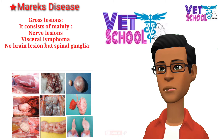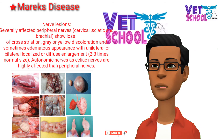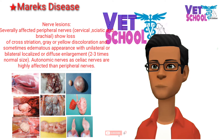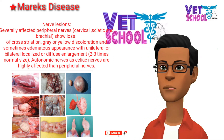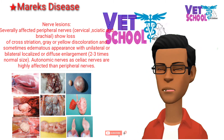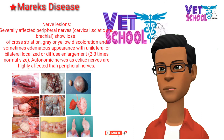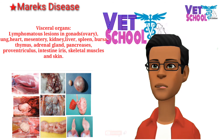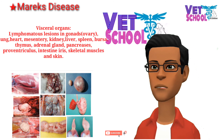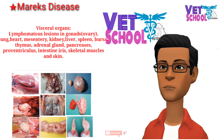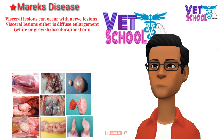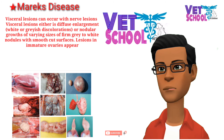Gross lesions consist mainly of nerve lesions and visceral lymphoma, with no brain lesions but spinal ganglia involvement. Severely affected peripheral nerves — cervical, sciatic, and brachial — show loss of striation, gray or yellow discoloration, and sometimes edematous appearance with unilateral or bilateral, localized or diffuse enlargement two to three times normal size. Autonomic nerves such as celiac nerves are more highly affected than peripheral nerves. Visceral organs show lymphomatous lesions in gonads, ovary, lung, heart, mesentery, kidney, liver, spleen, bursa, thymus, adrenal gland, pancreas, proventriculus, intestine, iris, skeletal muscles, and skin.